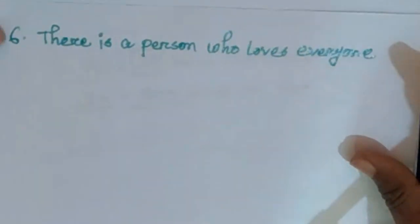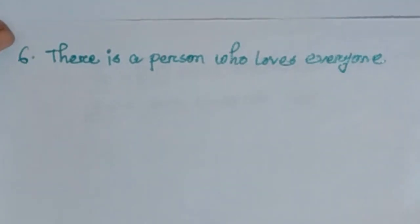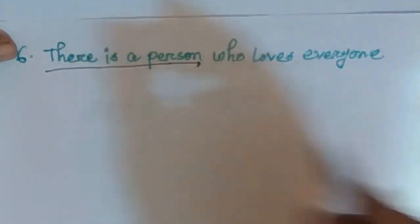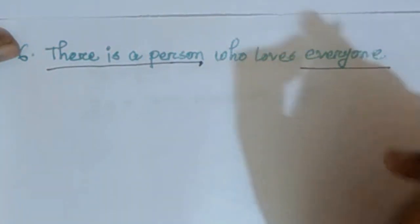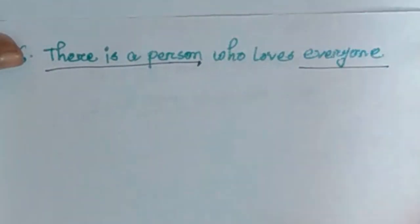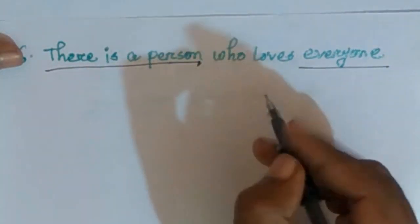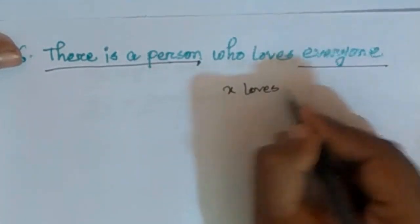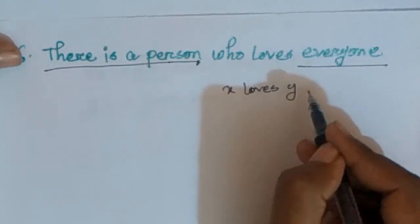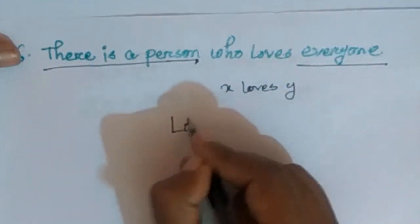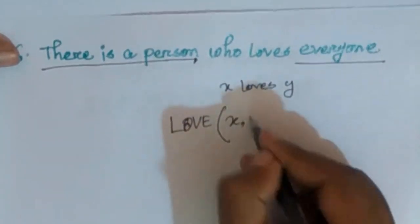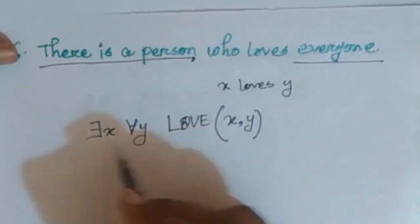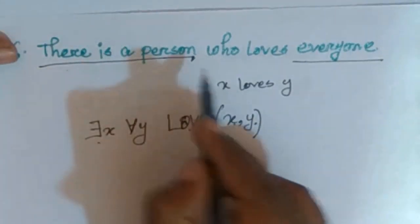Finally: 'There is a person who loves everyone.' There is a person — this uses an existential quantifier. And 'everyone' uses a universal quantifier. So we write: for some x, for all y, x loves y. We represent love as L, so: there exists x for all y, L(x, y). That means there is a person who loves everyone.